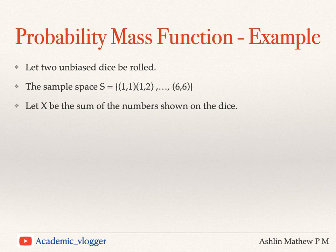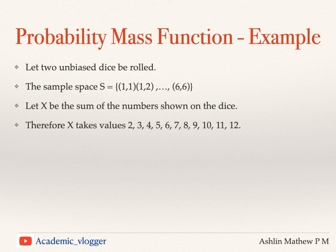We know the possible outcomes are (1,1), (1,2), etc. up to (6,6). So X, the sum of the numbers shown on the dice, takes values 2, 3, 4, 5, etc. up to 12. Because 1+1 gives us 2, 1+2 gives us 3, and 2+1 also gives us 3. So the possible values X takes are 2, 3, 4, 5, etc. up to 12.